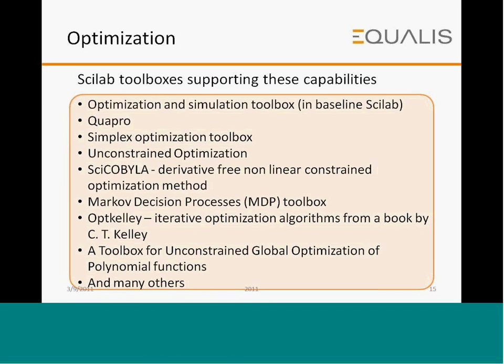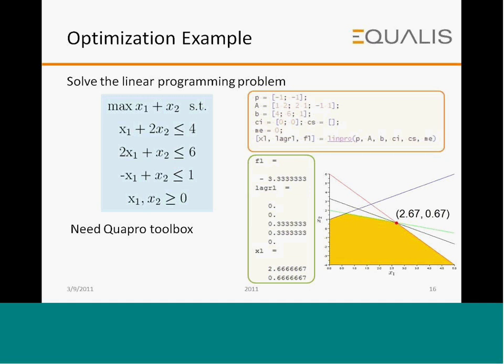The third area is optimization. Scilab has many toolboxes to support optimization problems: the optimization and simulation toolbox built into Scilab, Quabro for quadratic programming, the Simplex optimization toolbox, toolbox for unconstrained optimization, ICOP which is a derivative-free nonlinear constrained optimization method, Markov decision processes toolbox, iterative optimization algorithms, and unconstrained global optimization for polynomial functions. As an example, using the quadratic programming toolbox, we maximize x1 + x2 subject to four constraints, with the solution plotted in the console window.